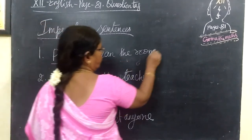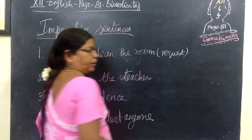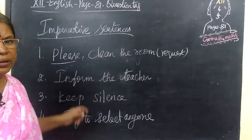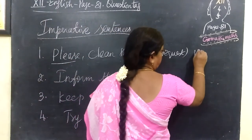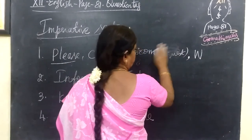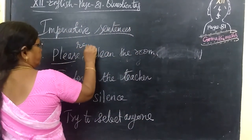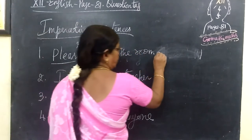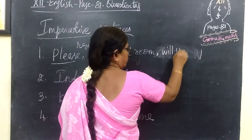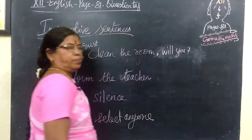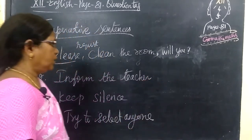Here: 'Please clean the room.' The word 'please' indicates a request. So when you find a statement in request form, you use the question tag 'will you.' Put a comma, then write 'will you.' So if you find the word 'please,' you use the question tag: will you?